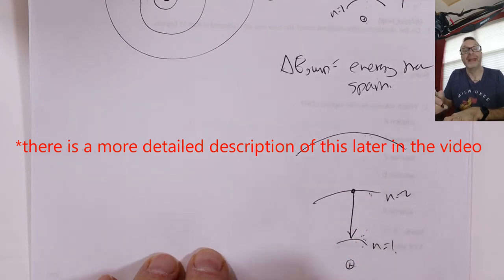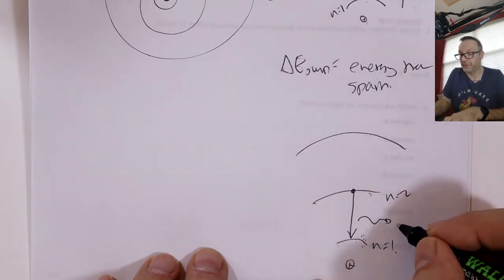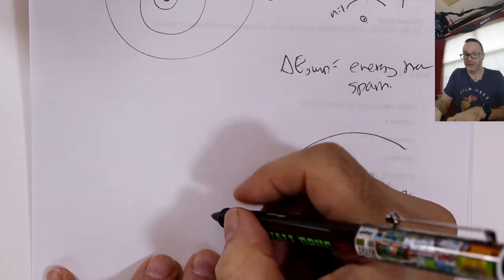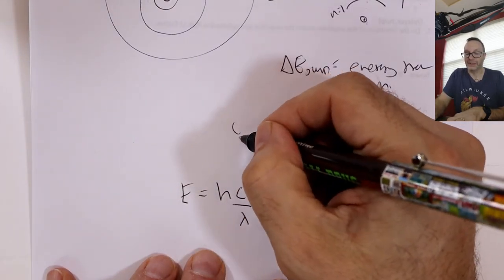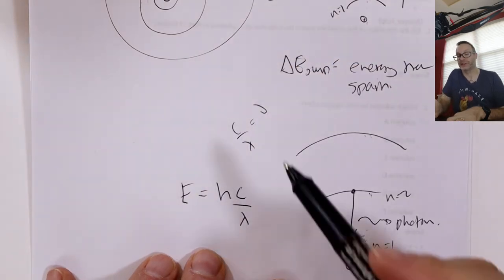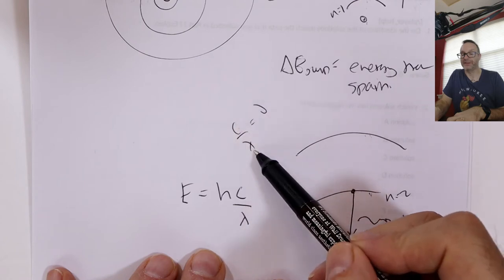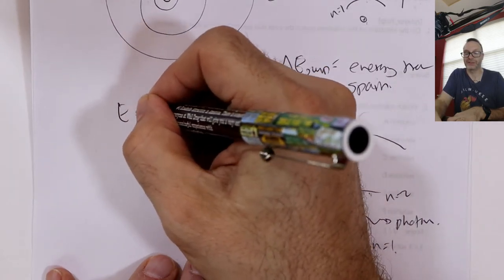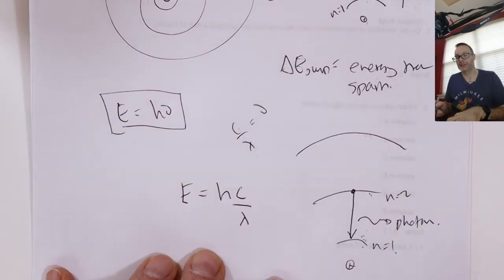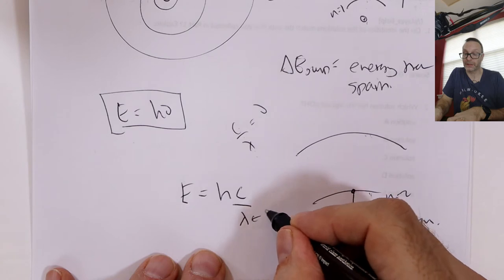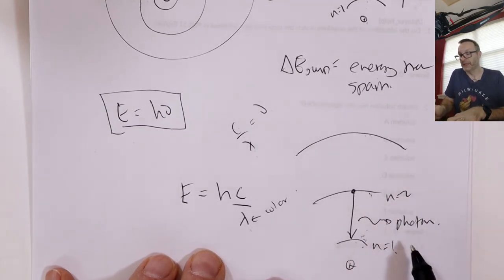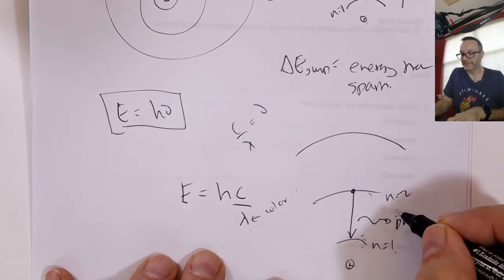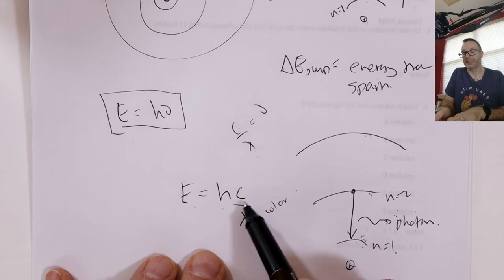When the electron drops back down, energy comes out in the form of a photon. The energy of a photon is E = hc/λ, where c/λ is just frequency — speed of light divided by wavelength in meters gives frequency. Sometimes you'll see E = hf. If we need it for wavelength, because wavelength is color — red light is around 600 nanometers, blue light is at 400 — we can work out the wavelength and determine the color.